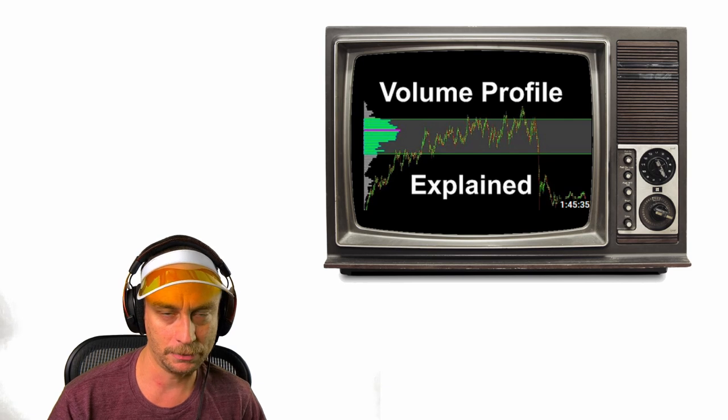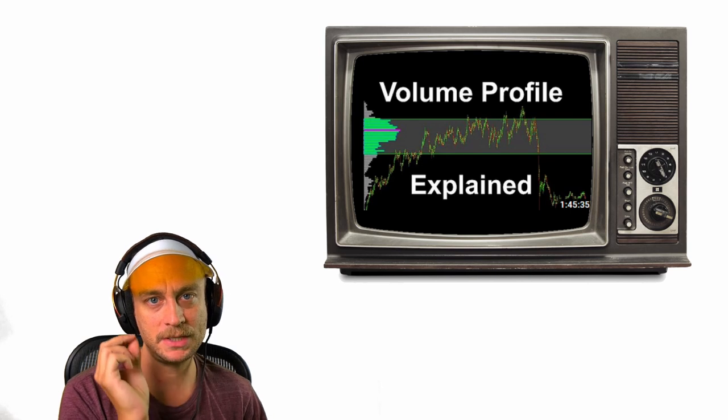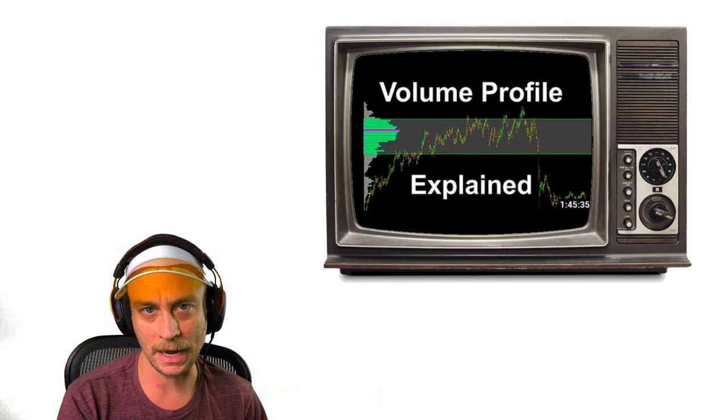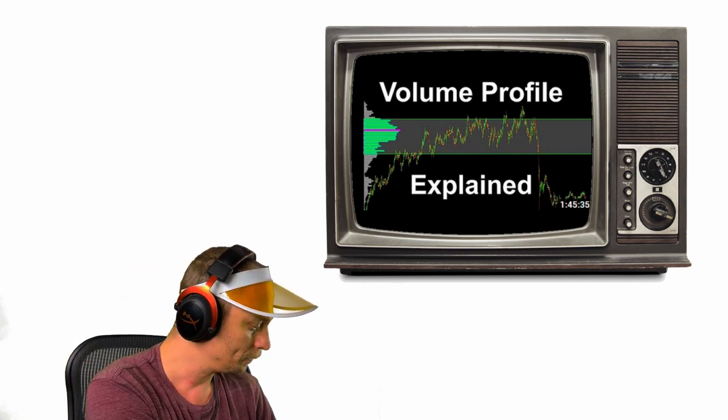If you want to know what a bottom or top tick is, go to the volume profile video and check the description — that's the number one asked question. I believe it's explained at around minute 22. So going back to the hypothetical: ES might be set up to gap jump, and you need to watch the gap jump video to understand what that means.